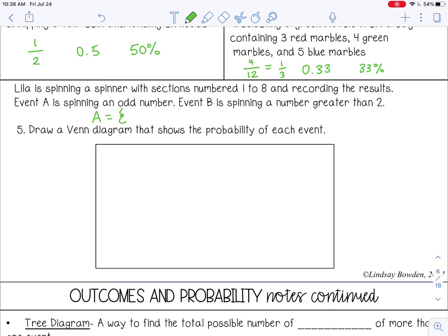A is spinning an odd number. So that would be 1, 3, 5, and 7, because this spinner is numbered 1 through 8. And then event B is spinning a number greater than 2. So that would be 3, 4, 5, 6, 7, 8.